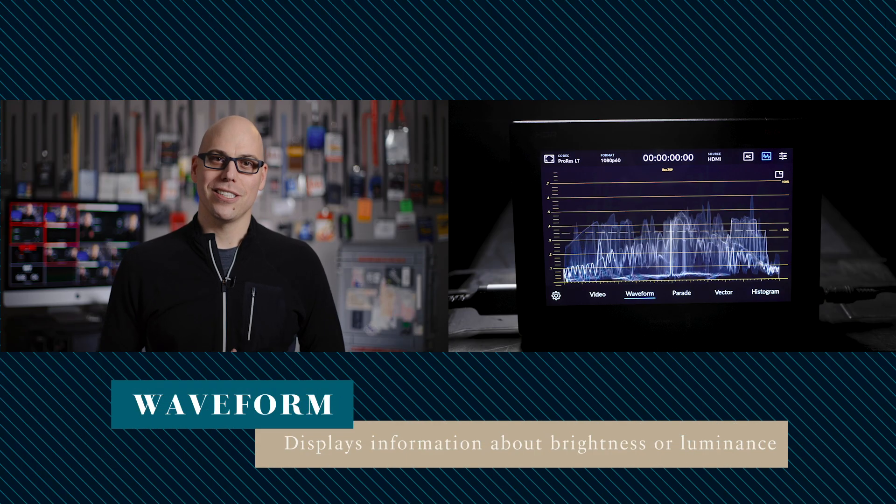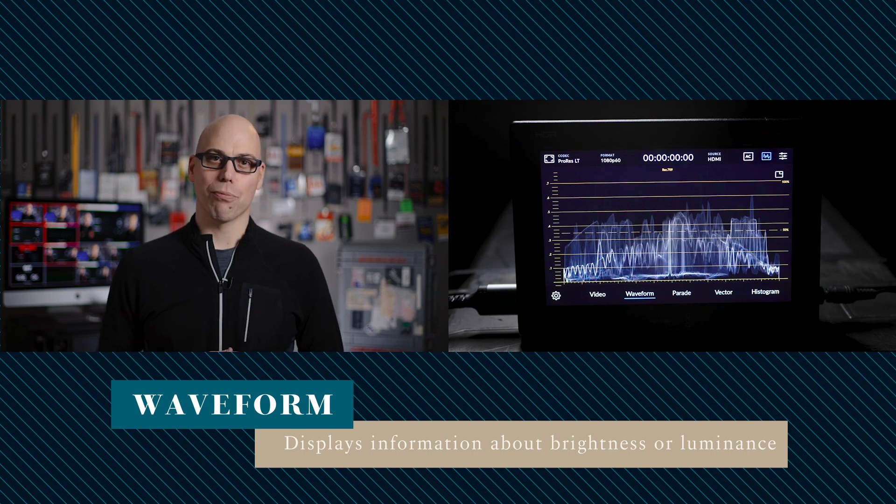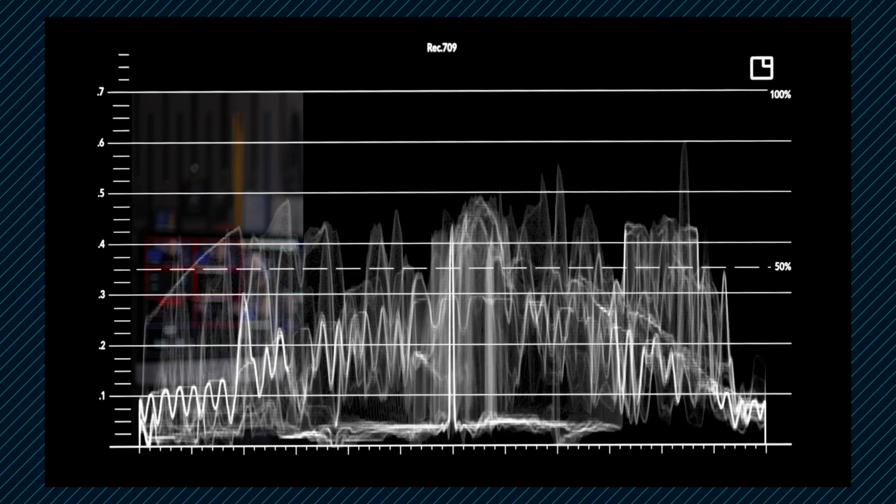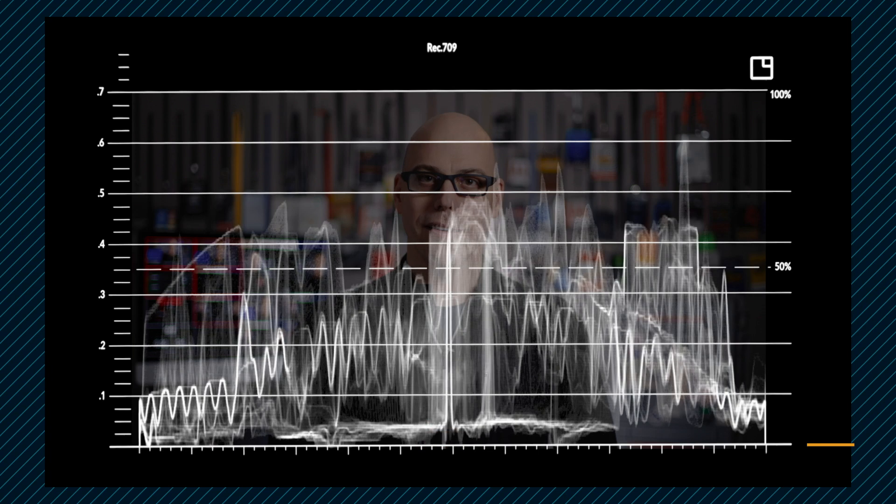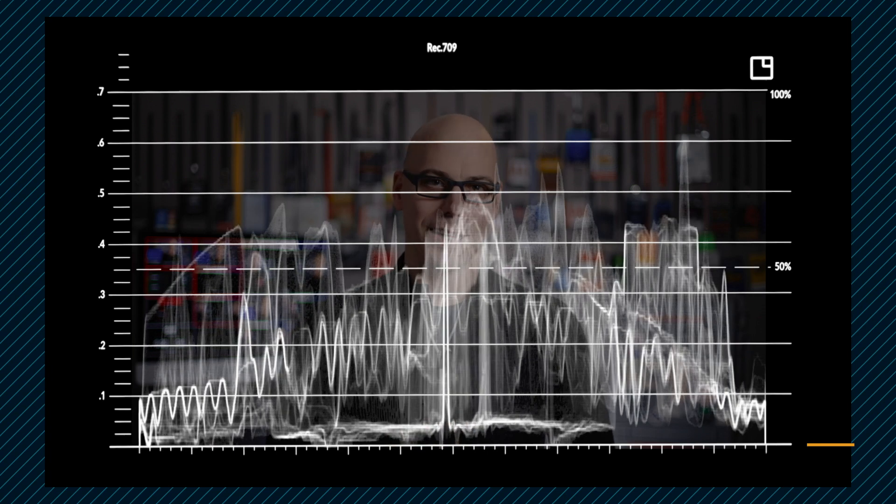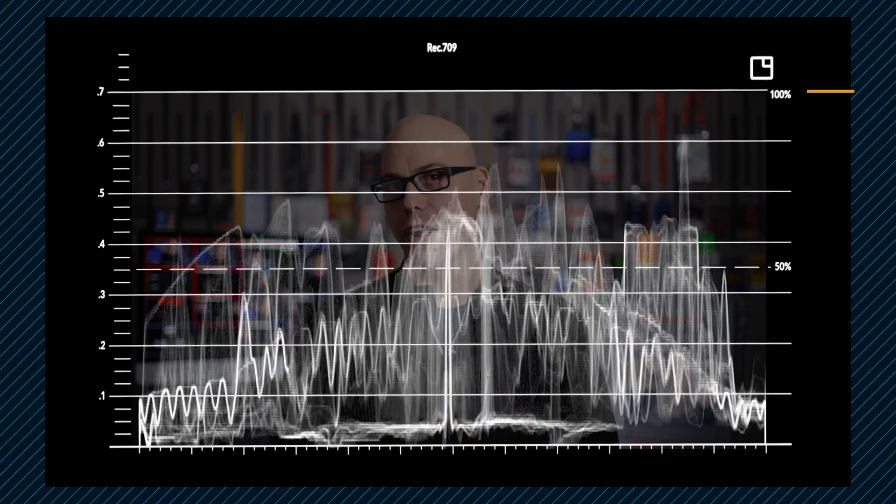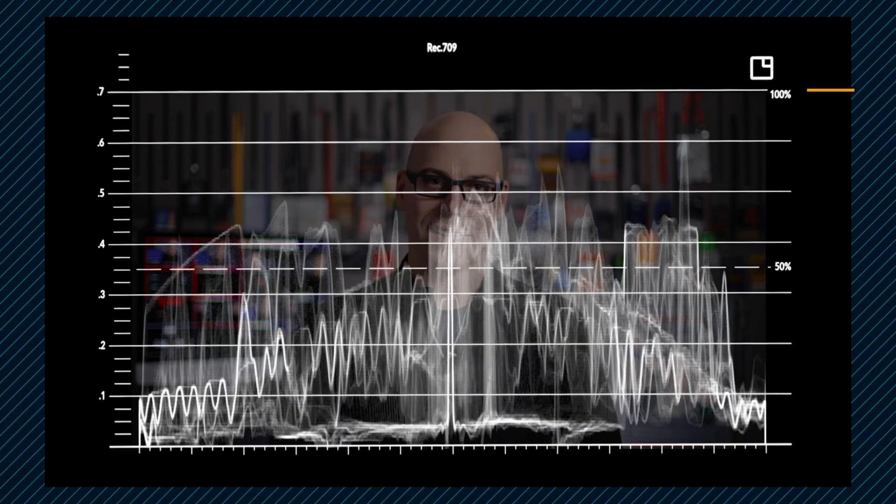A waveform monitor uses an IRE scale to measure the brightness or luminance of a video signal. It tells us nothing about color. It represents the picture mapped from left to right and plots brightness from top to bottom. 0 IRE is black and is located at the bottom, and 100 IRE is white located at the top.